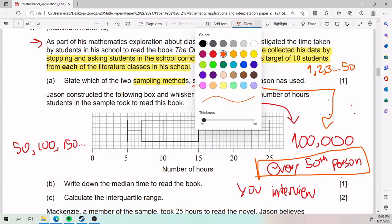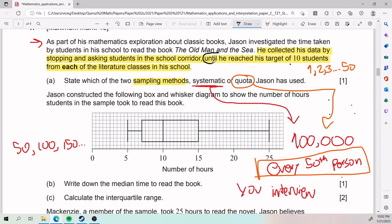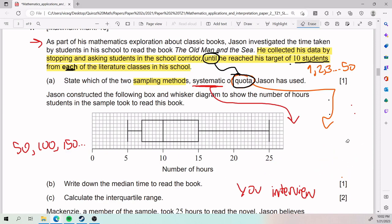And so here, the key word, or a big hint, is that they say until. So until he reaches his target of 10 students per class from each of the literature classes in his school, that is like his sampling method. And so since it's about reaching a certain amount, until is the big hint for quota, and it also strays from systematic, because systematic would say something like every X amount of people. So in this case, it's not every X amount of people. It is until he reaches his target of 10 students. So that is for part A. The answer is quite simply quota.